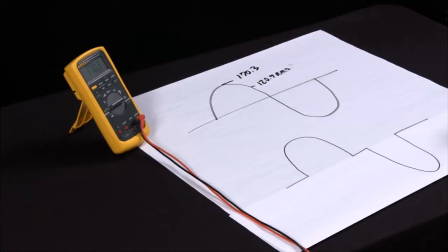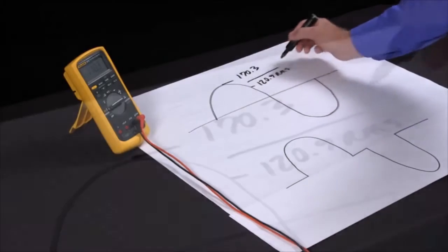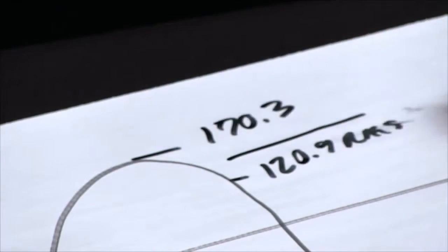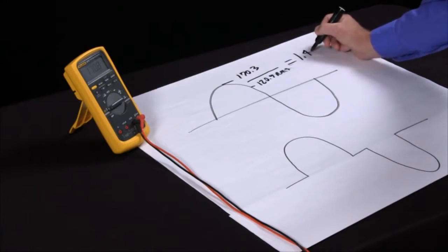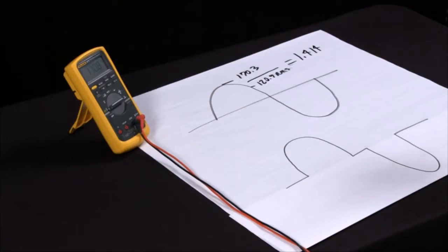Now there's something called the Crest factor, which if I divide the RMS into the peak on a nice clean sine wave, this should come to 1.414. Now we can all divide 120.9 into 170.3 and come up with 1.414.